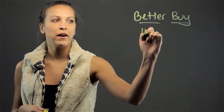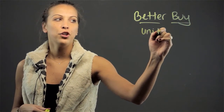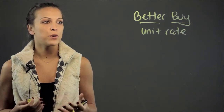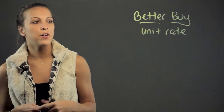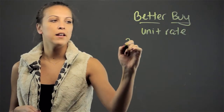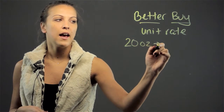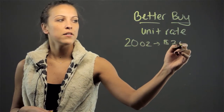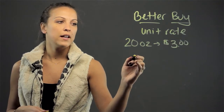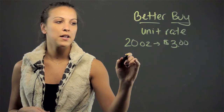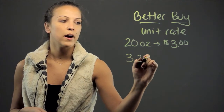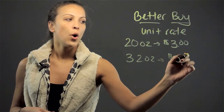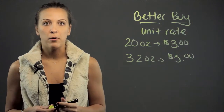They would have to do this by finding the unit rate of each item that you give them. For example, if you tell them there's a soda that is 20 ounces and it costs $3, and then you have another soda that is the super size 32 ounce, and that costs $5 — which is the better buy?